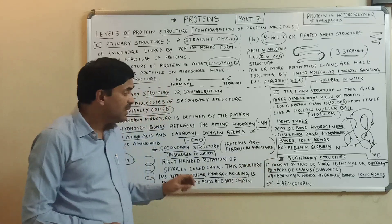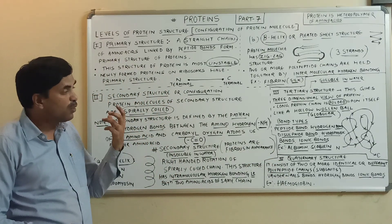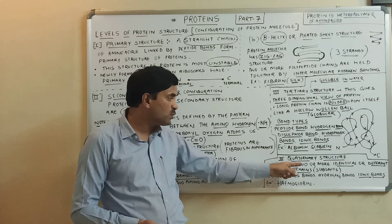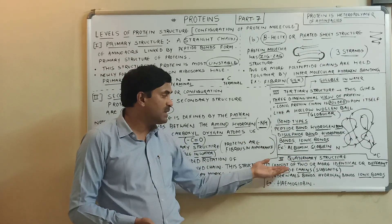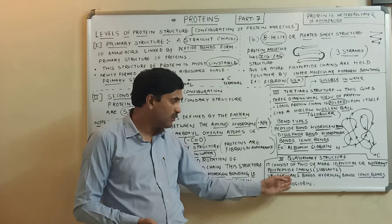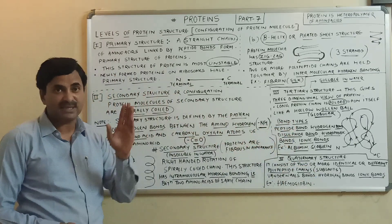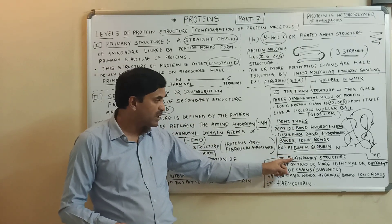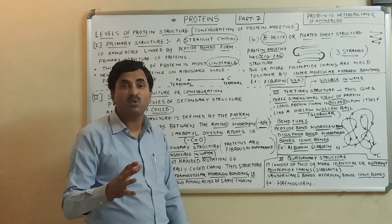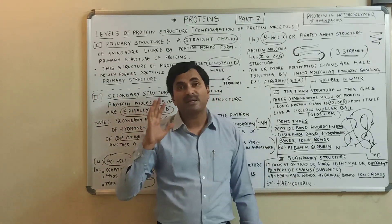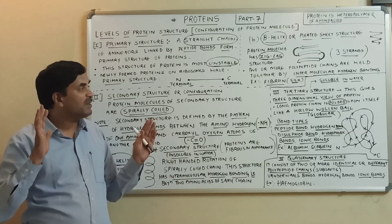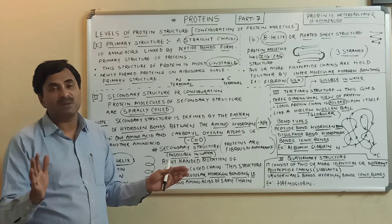The quaternary structure consists of two or more identical or different polypeptide chains or subunits. Various bonds are present here as well — van der Waals forces, hydrogen bonds, ionic bonds, etc. The best example of the quaternary structure is hemoglobin, which has four chains: two alpha chains and two beta chains.